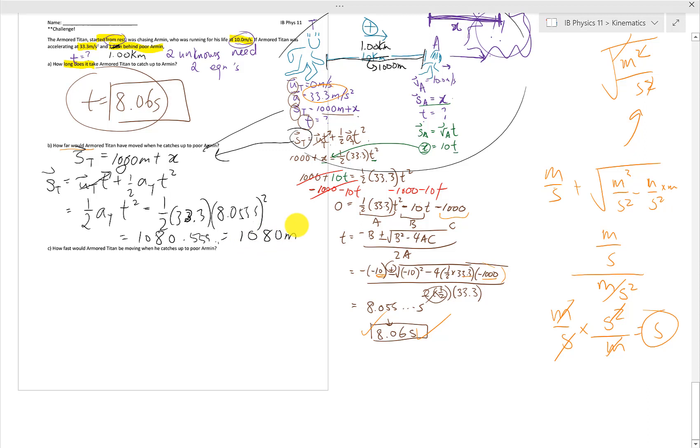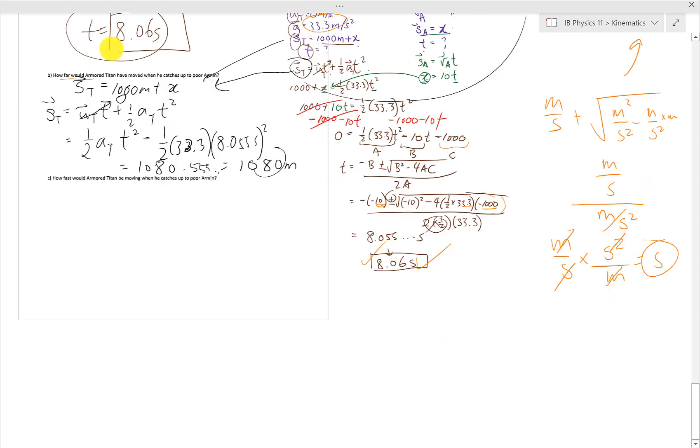Hey, that kind of tells us that since the Armored Titan ran for 1,000 meters and a little bit more, the X is probably this 80 meters here. So Armin only moved 80 meters before he encountered the Armored Titan, so that's cute.